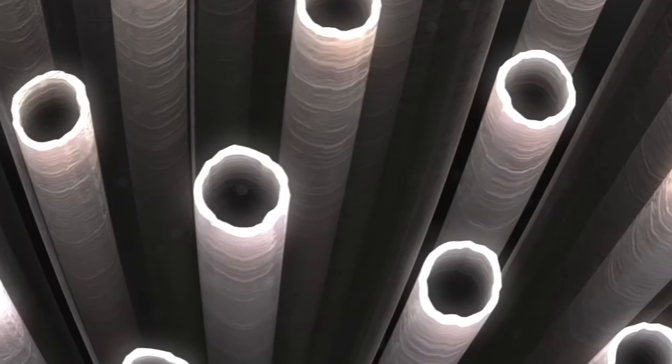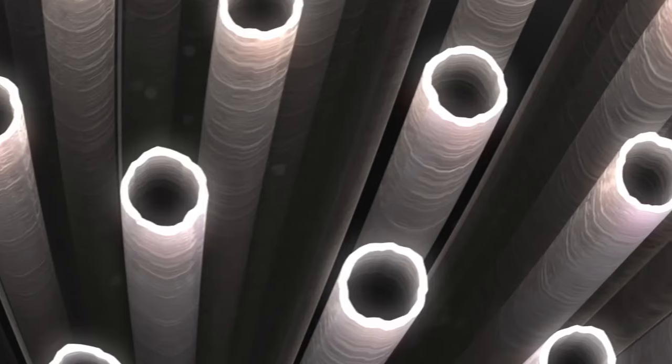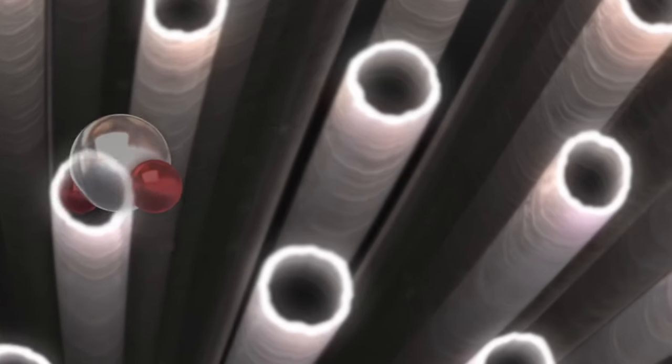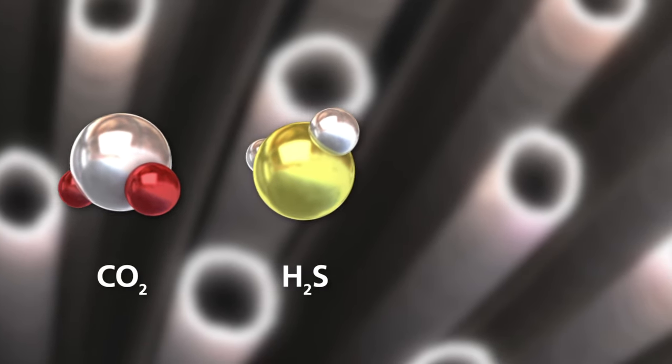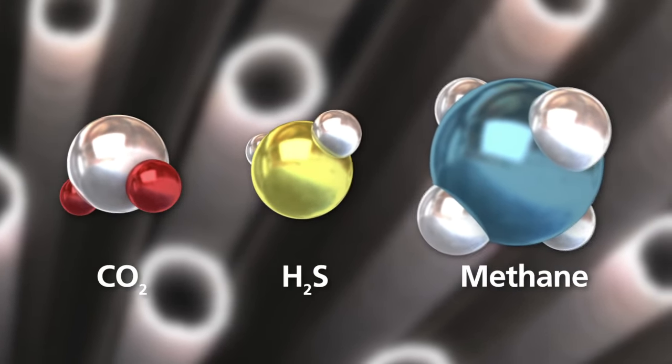Sinera CO2 membranes are asymmetric hollow fibers which preferentially permeate small molecules like CO2 and H2S faster than larger molecules like methane and higher hydrocarbons.